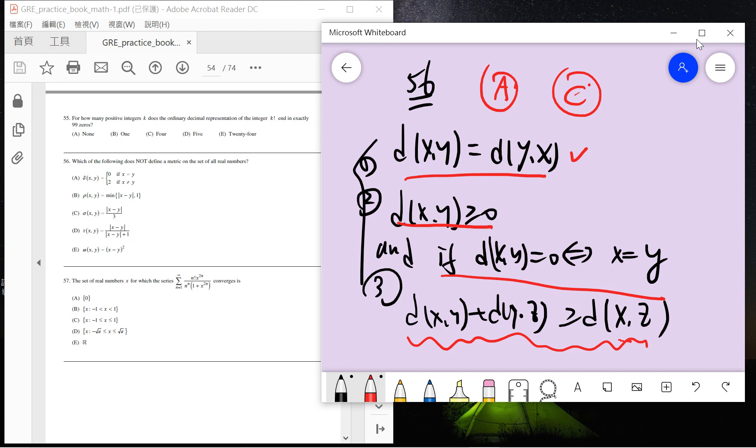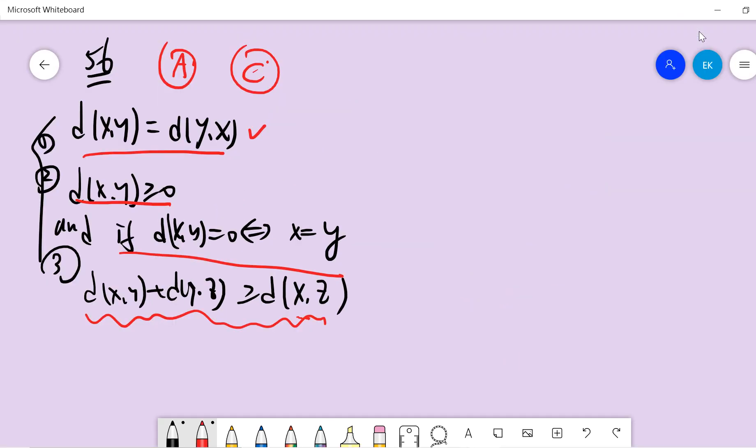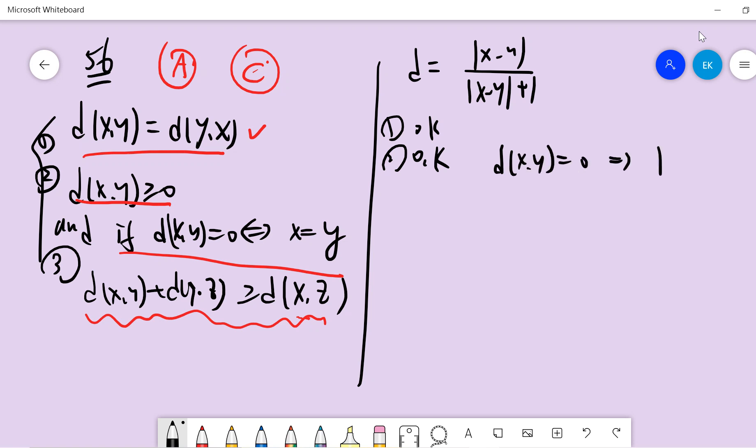Okay, so the difficult part is D. Okay, so I will check D for you guys. So D says that this is... So the first one is okay. The second one is okay, right? Because when d(x,y) equals zero implies that x minus y is zero. So basically we have x equal to y. So the difficult part is the third part.